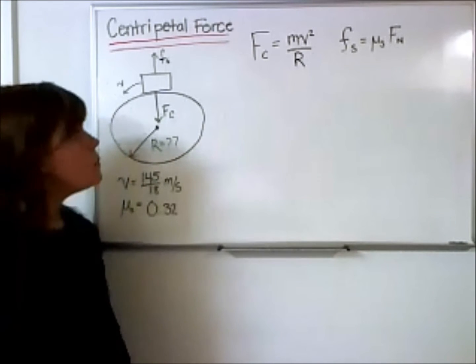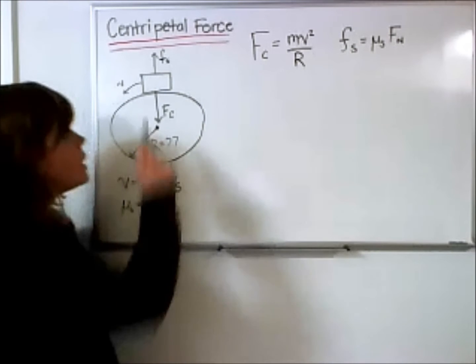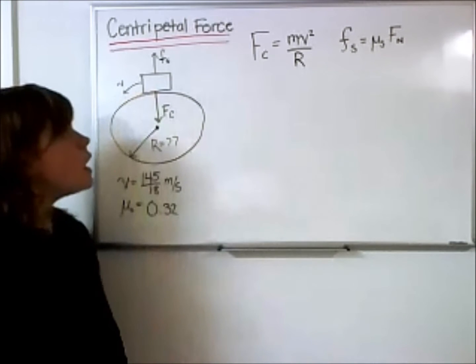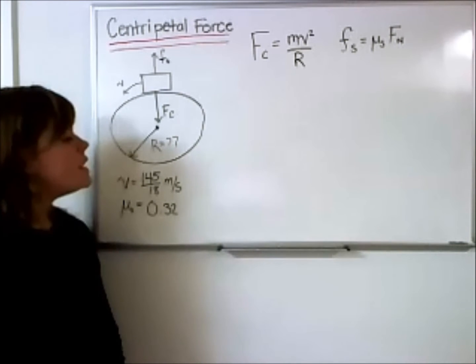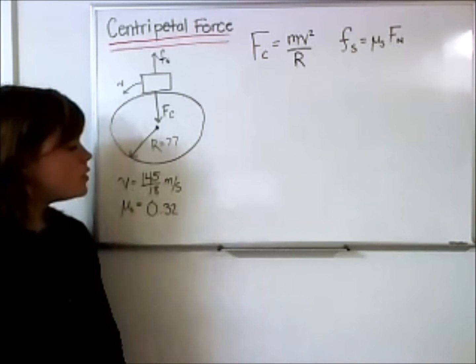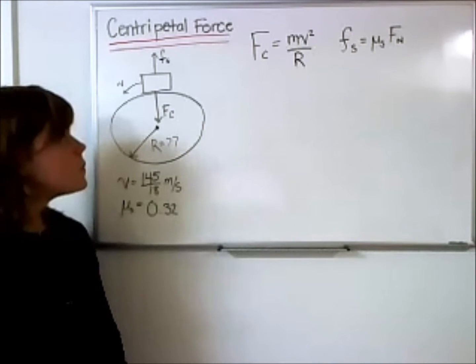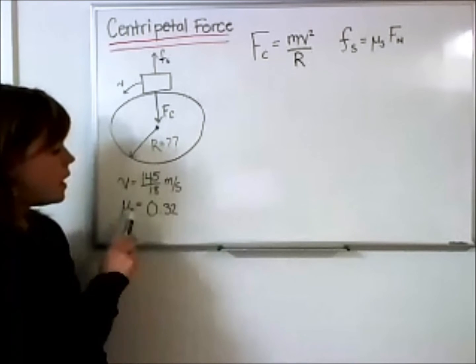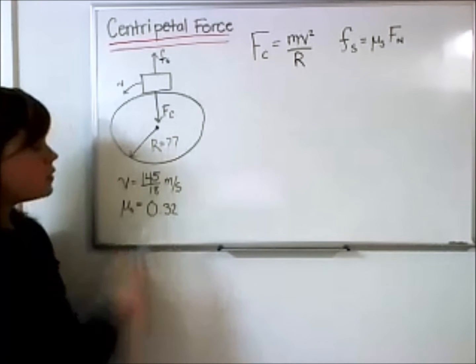So in this problem, what we have is a bike, car, some sort of vehicle that is going around a circular track. This vehicle is not accelerating in any way, but it does have a velocity V of 145 over 18 meters per second. The track also has a coefficient of friction to be 0.32.